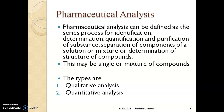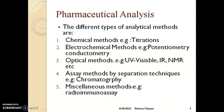The major types of pharmaceutical analysis are qualitative analysis and quantitative analysis. As the names suggest, qualitative means checking the purity, safety, and efficacy of the sample, while quantitative means checking the amount of the drug, the additives, and the components in that particular sample. These are the two major types.